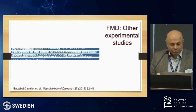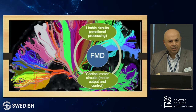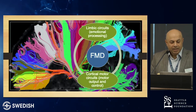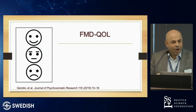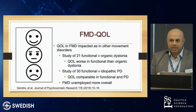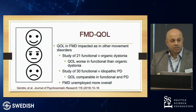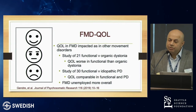Ultimately, we have a model showing that limbic circuits and cortical output circuits are not interacting well. Why should we care? Because this does impair quality of life — significantly. The quality of life in functional movement disorders is impacted as much as in Parkinson's disease, and sometimes more than in dystonia.